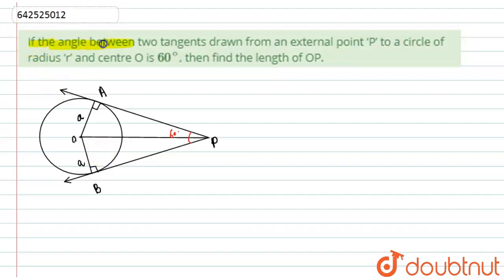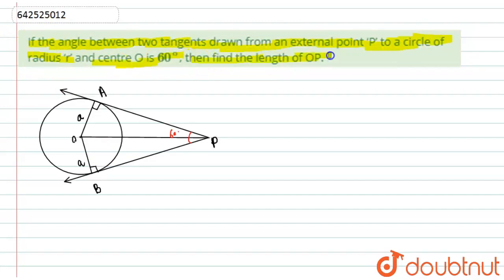Let us start with the question. We are given: if the angle between the tangent drawn from external point P to a circle with radius r and center O is 60 degrees, then find the length of OP.